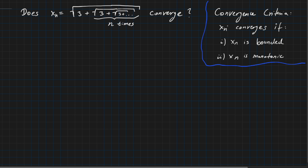Before we start, we have a note on convergence criteria. This is very useful in order to prove that a sequence is convergent. One can try to prove that the sequence is bounded first, and then prove that the sequence is monotonic — either monotonically increasing or decreasing. If both statements hold, we can conclude the sequence is indeed convergent.